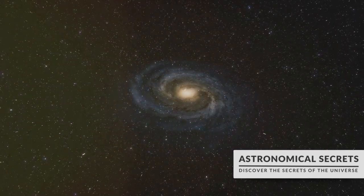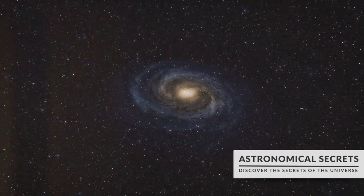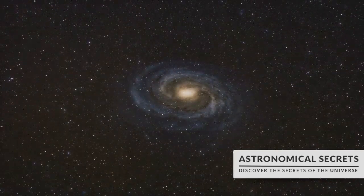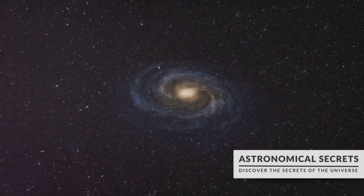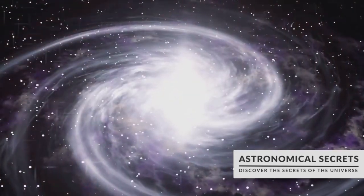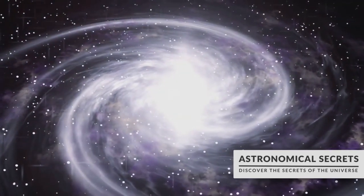Lastly, we come across the barred spirals, galaxies that have a bar-like structure of stars cutting across their center. This bar acts as a cosmic conveyor belt, channeling gas and dust into the central bulge and sparking bursts of star formation.